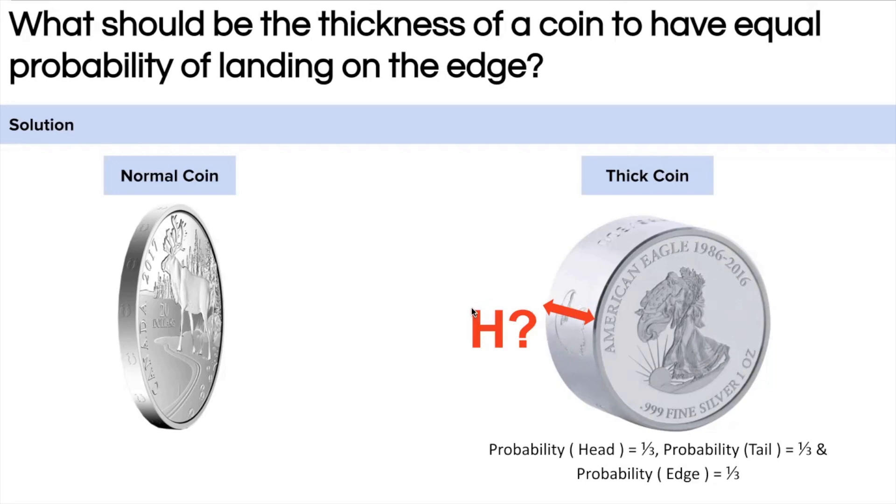But now here you see there is a thickness of the coin; it can land on its edges as well, right? And it seems like the probability of landing on its edge would increase as we increase the thickness of the coin. This is the intuition you might be following. So what would be the thickness if it has equal probability of landing on head, tail, or on its edges? So this is the question.